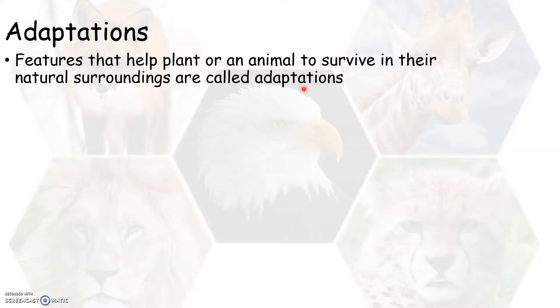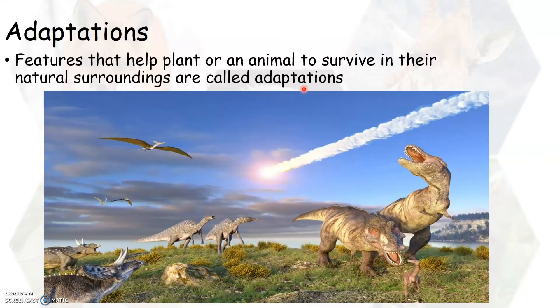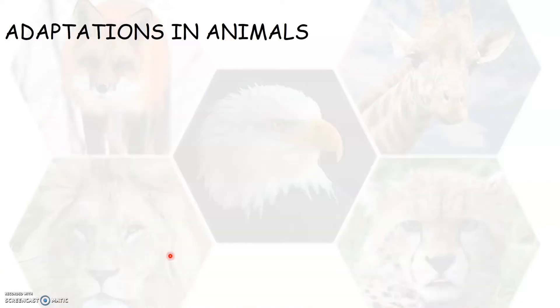Do you know one such animal which has got extinct? Yes, they are dinosaurs, as you see here in this picture. These are extinct, which means they no longer exist on earth. This is because they could not adapt themselves to their natural surroundings — this might be because of climate change and various other reasons. Now let us go on to learn adaptations in animals.